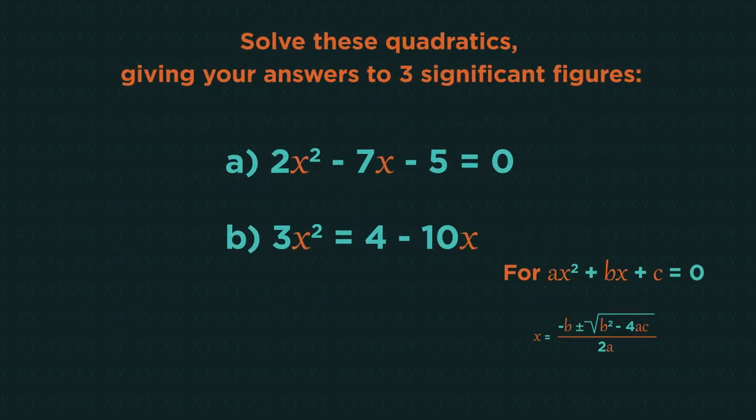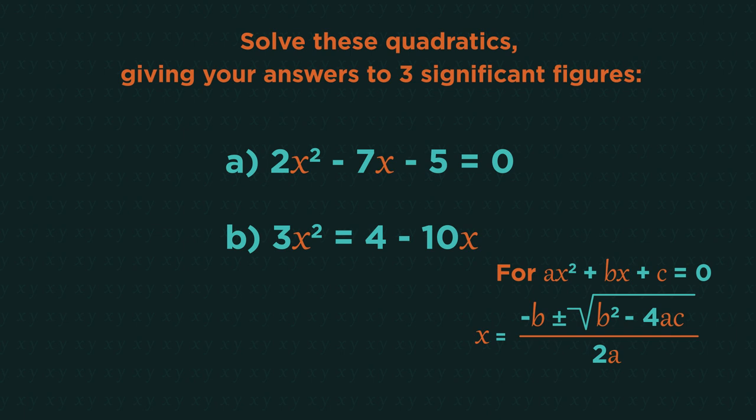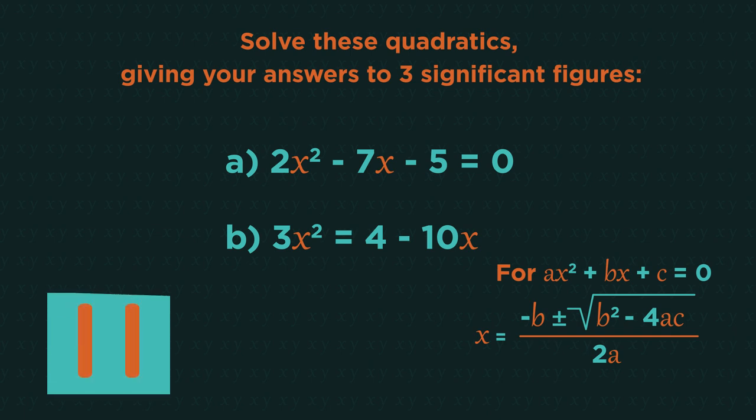So here are a few for you to do. Remember to use brackets to help with negatives. We know that we need to use a quadratic formula because it tells us to round our answer. For b, make sure the quadratic equals 0 before you start. Pause the video, work them out and click play when you're ready.